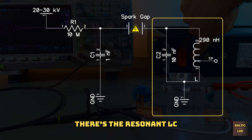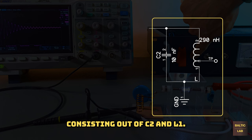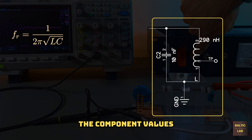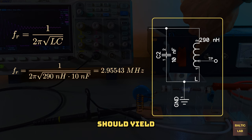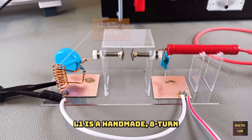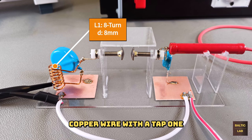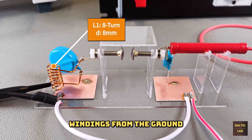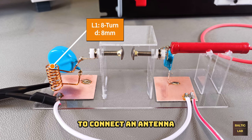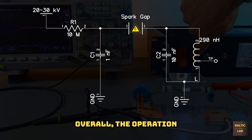Lastly, there is the resonant LC tank circuit consisting of C2 and L1. The component values used in this demonstration should yield a resonant frequency close to about 3 MHz. L1 is a handmade 8-turn air core inductor wound from enameled copper wire with a tap one and a half windings from the ground to connect an antenna or oscilloscope probe.